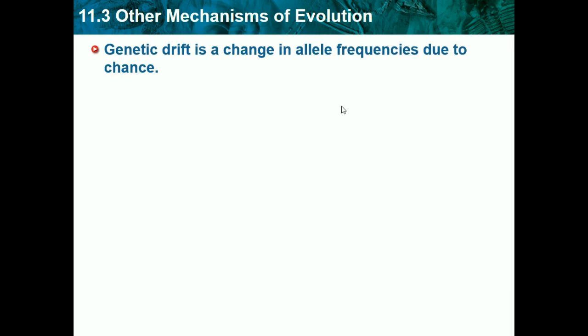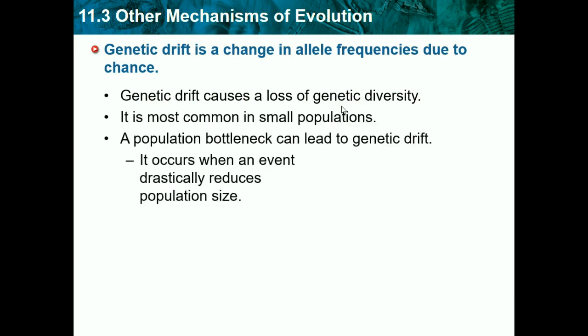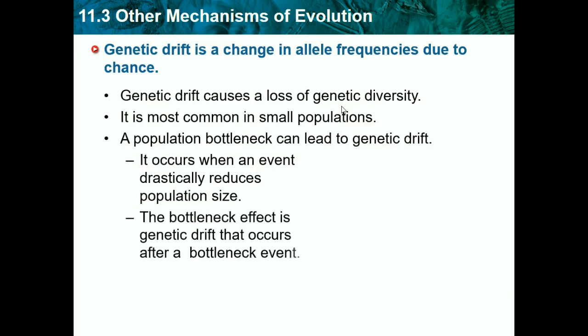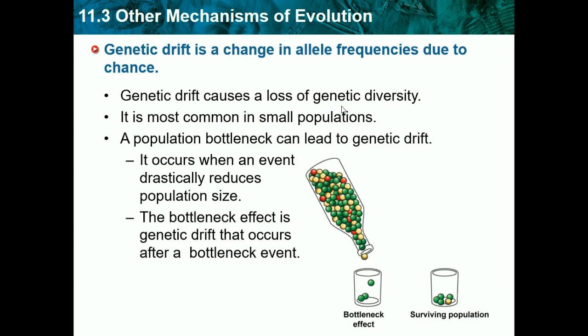Genetic drift is a change in allele frequencies due to chance, and it causes a loss of genetic diversity. A bottleneck is when a large part of the population dies from chance — anyone can die, whether they have good, bad, or normal alleles. This causes genetic drift, which is a loss of genetic diversity.